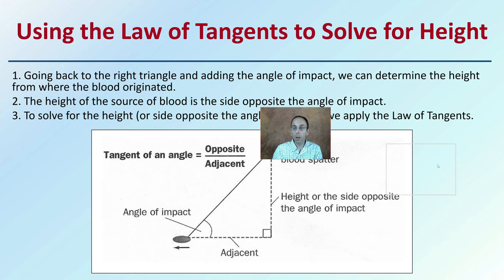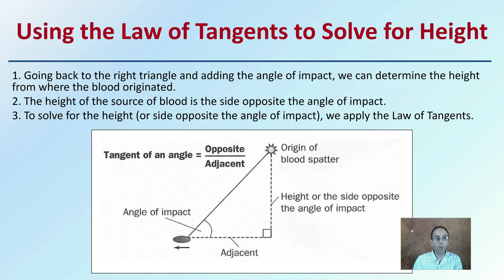Using the law of tangents to solve for height: going back to the right triangle and adding the angle of impact, we can determine the height from where the blood originated. The height of the source of blood is the side opposite the angle of impact. To solve for the height, or opposite side, we apply the law of tangents — using the angle of impact and knowing the adjacent side, we're able to calculate the origin of the blood spatter.